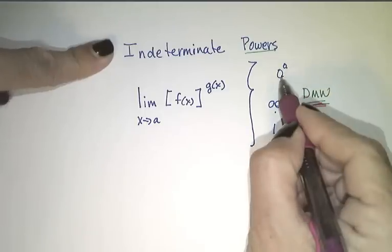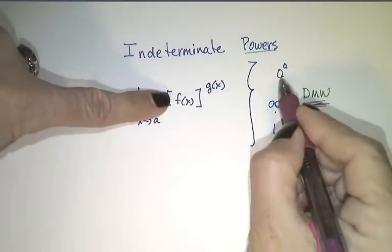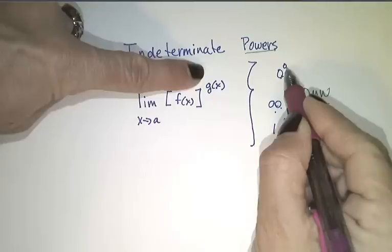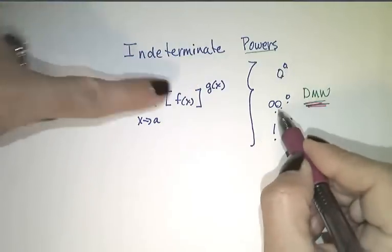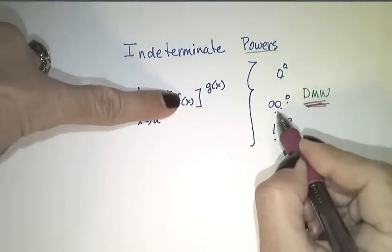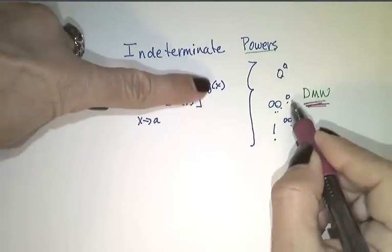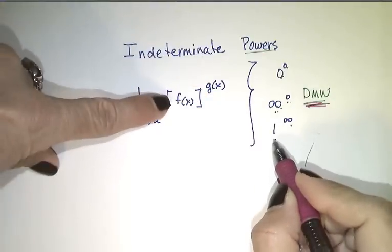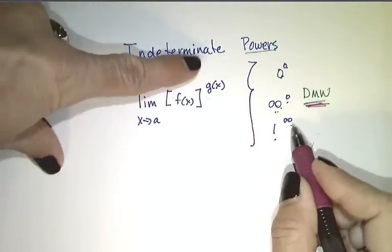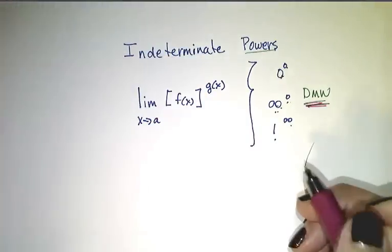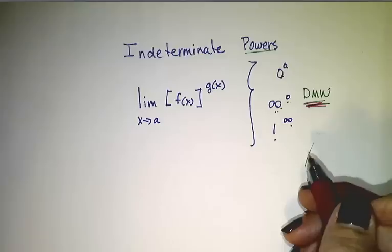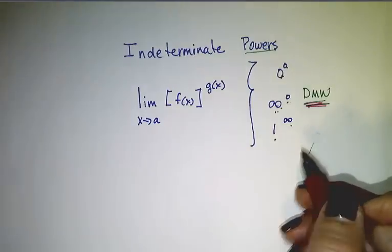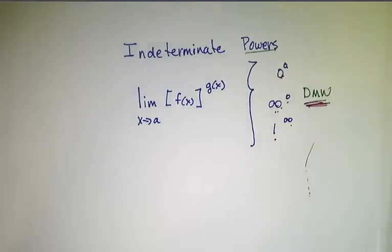In this case we're saying that f is going to 0 while g is going to 0, f is going towards infinity while g is going towards 0, or f is going to 1 while g is going towards infinity. So let's illustrate what we would do by looking at two examples.